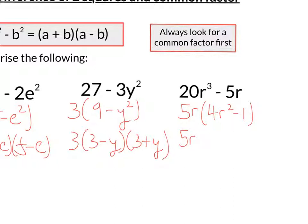So I've got 5r outside. 4r squared, well, that square root is 2r, but 1 square root is 1. So I've got 2r minus 1, 2r plus 1. And so the fully factorised form for that one is 5r, 2r minus 1, 2r plus 1.